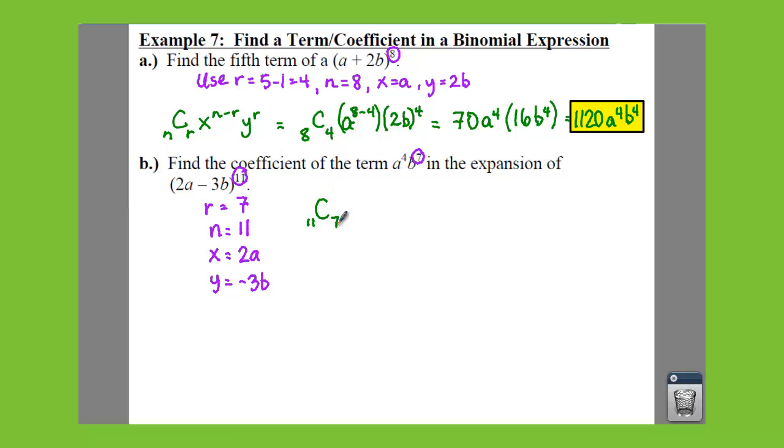So we're going to say c sub, we have 11 choose 7. You have your x, which is 2a to the power of 11 minus 7, that's your n minus your r, times your negative 3b to the 7th because that is your r value.